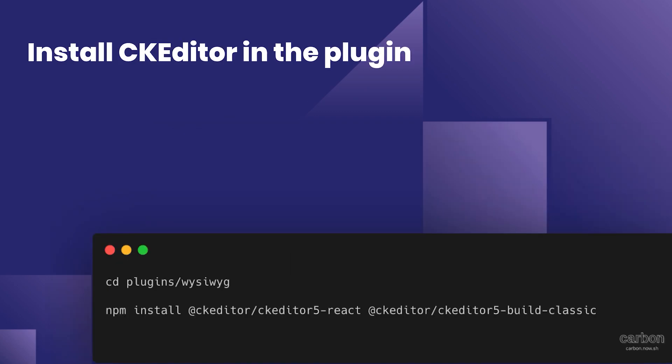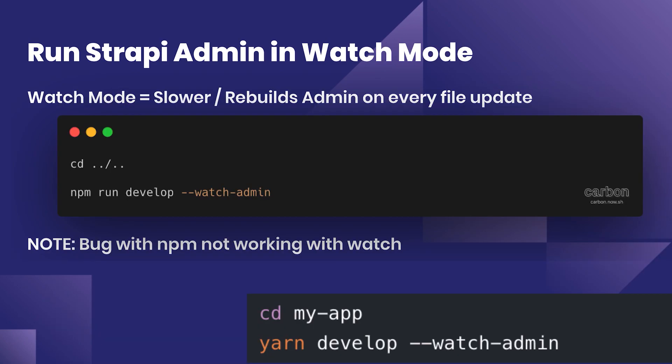After that we're going to install CK editor in the plugin and then run Strapi in watch mode. As of version 3.1.1, you may not be able to run watch admin mode using npm, so you may have to use yarn and run `yarn develop --watch-admin`, because npm will eat the `--` command and it won't go through.